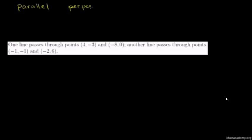In this video we're going to do a couple of examples that deal with parallel and perpendicular lines. So you have parallel, you have perpendicular, and of course you have lines that are neither parallel nor perpendicular. Parallel lines never intersect.